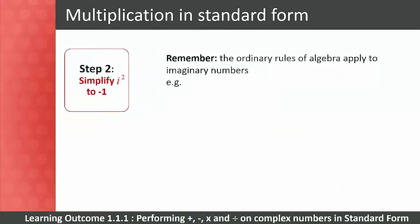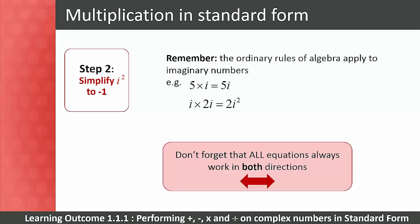Step 2: remember that the ordinary rules of algebra apply to imaginary numbers — for example, 5 times i equals 5i, and i times 2i equals 2i². Students sometimes need to be reminded that equations always work in both directions. You may find it necessary to revise some of this algebra with students before proceeding.